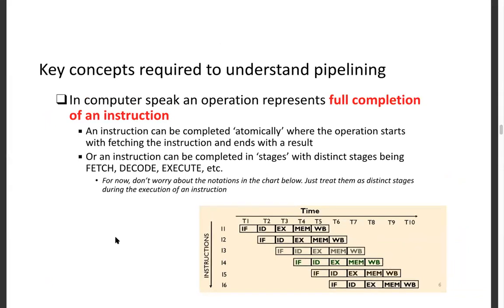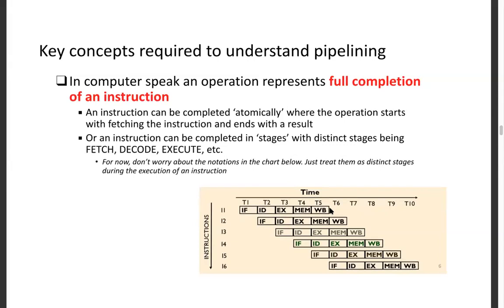Putting this in the context of computer programs: every instruction goes through different stages. In the Hack program we've studied so far, the approach was to wait for an entire instruction to be executed by the CPU before reading the next instruction from ROM — that's an atomic operation. Pipelining says: don't do that. Divide the journey into five stages: IF (instruction fetch), ID (instruction decode), EX (execute), MEM (memory access), and WB (write-back).